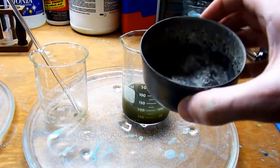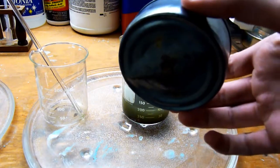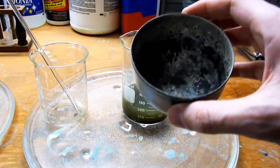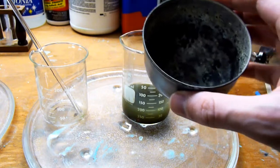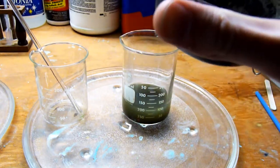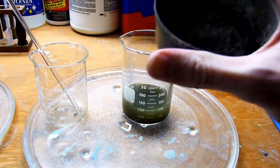This is the can that the thermite was set off in. As you can see it's severely warped from the heat. But the reaction should have produced pure copper metal. Well, impure copper metal I should say.